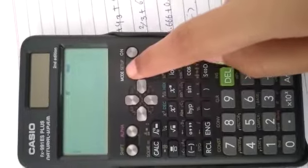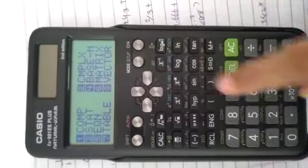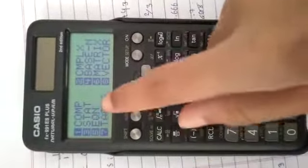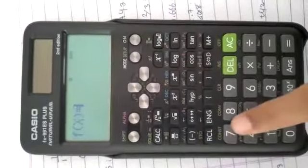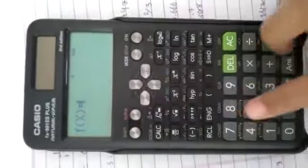In the calculator, we are pressing 'more', then 'setup'. Then we need table, so we press 7. Then we get this form.